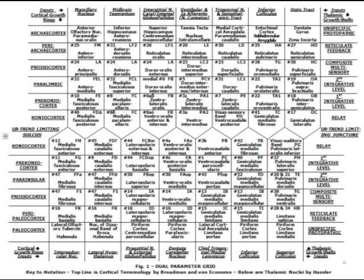Announcing the introduction of the first periodic table for the human forebrain, which enjoys similar advantages to the dramatic influence that the periodic table of elements has enjoyed with respect to chemistry and physics. This respective neural counterpart imparts a crucial sense of systematic order and purpose to the fragmented state of affairs currently prevailing within the neurosciences.